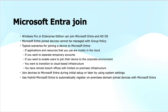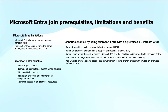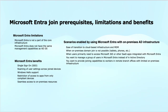Regarding Microsoft Entra Join prerequisites, limitations, and benefits — first, limitations: Microsoft Entra is not part of core infrastructure; it is a managed service with limited control, also referred to as identity as a service. It does not have the same management capabilities as ADDS. The architecture is a flat structure as compared to ADDS, which uses X.500 hierarchical architecture. There are no group policies, no OUs for hierarchy. Authentication protocols are also different — SAML, WS-Federation, or OpenID Connect — as compared to ADDS which uses Kerberos.